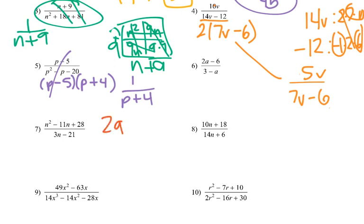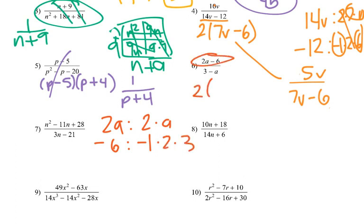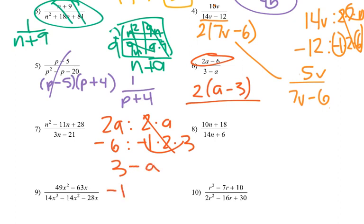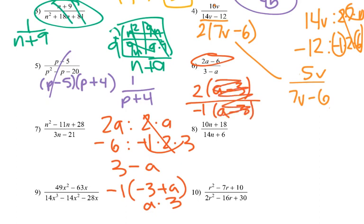For number 6, I've got 2a and negative 6. That's 2 times a, and negative 1 times 2 times 3. So on the top it would be 2 times a minus 3. Now we've got 3 minus a, and we can pull out a negative 1, giving us negative 3 plus a, or a minus 3. So on the bottom we'd have negative 1 times a minus 3. We can eliminate the a minus 3's, and the answer would be 2 over negative 1, or just negative 2.